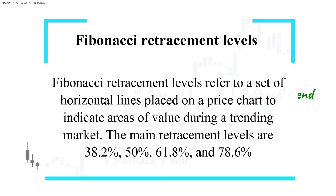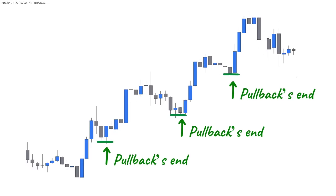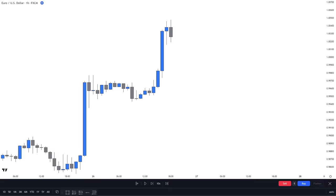Fibonacci retracement levels refer to a set of horizontal lines placed on a price chart to indicate areas of value during a trending market. The main retracement levels are 38.2%, 50%, 61.8%, and 78.6%, which can provide possible trade entries. Now let me show you how to use retracement levels on your chart.